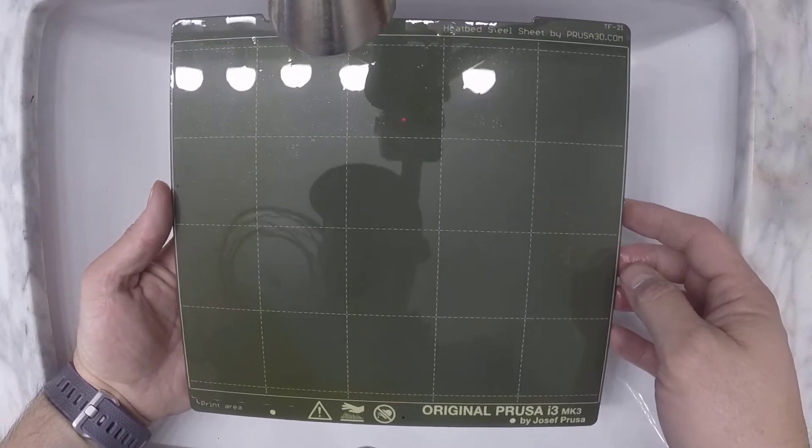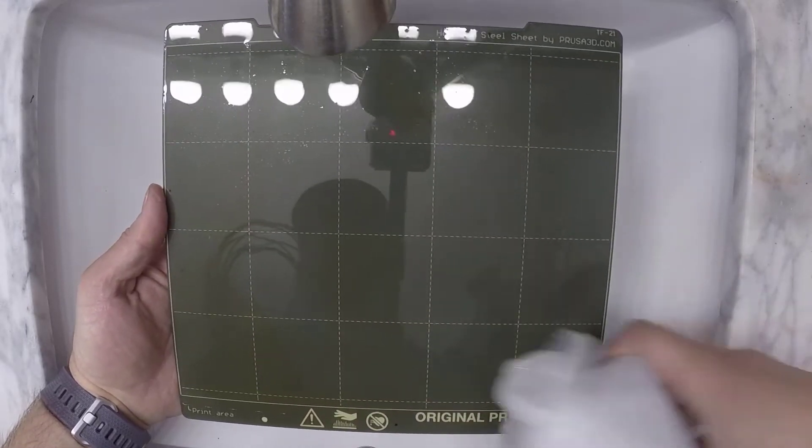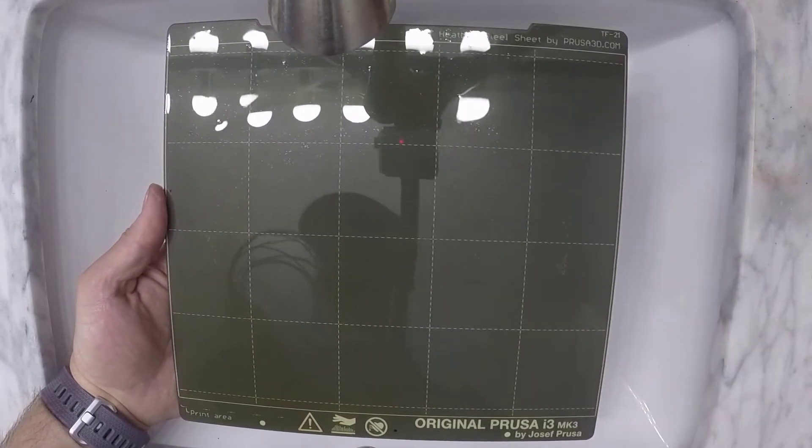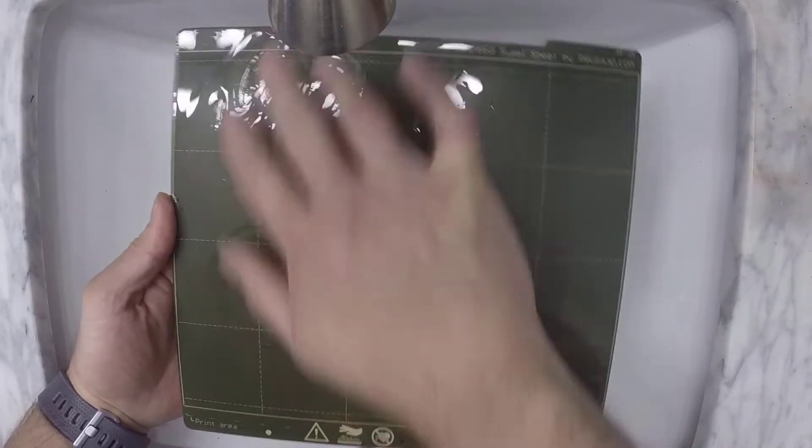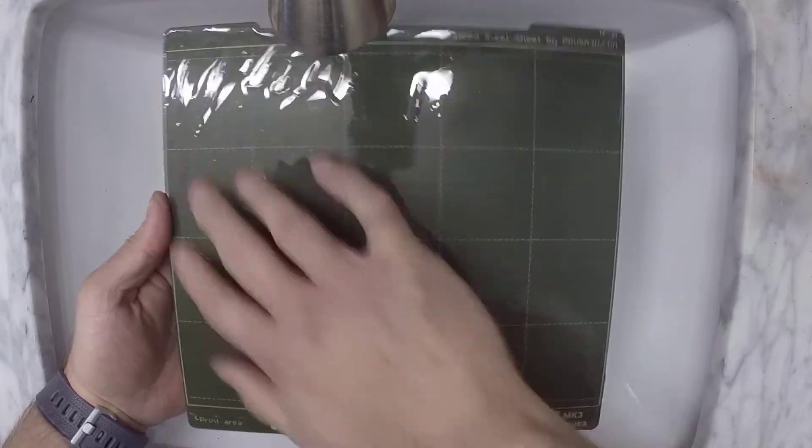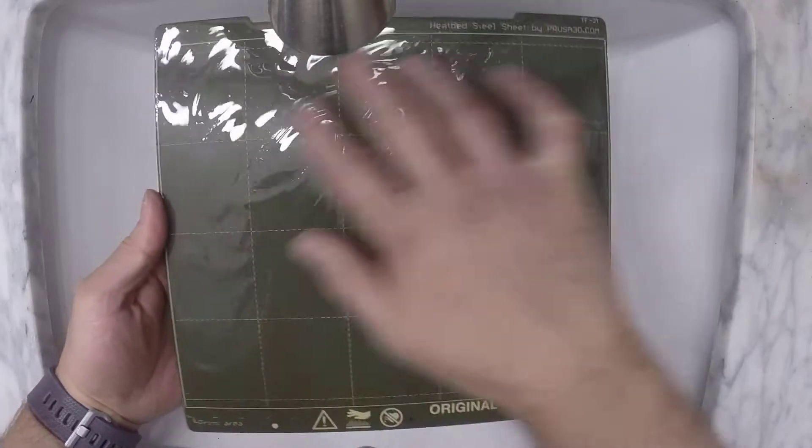And then when I've got this thing nice and got a nice sheen on there, maybe a little bit more IPA on there, a nice sheen on there. I'll just take my fingers and I'll rub it. And you can actually feel the hairspray start to kind of turn back into a gel. All right.